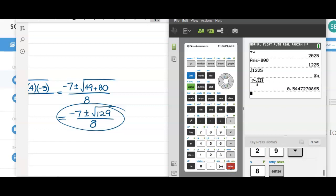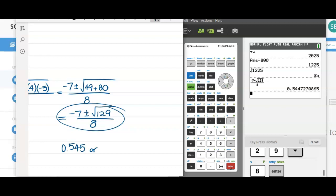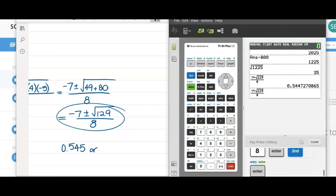So that would give us one answer, which would be 0.545. Now, I don't feel like typing that entire thing again. So I'll press second, enter to pull it up. And I'll just go back and I'll edit by making that subtract.